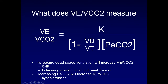You see increased dead space ventilation when you measure VE/VCO2 in disease states — in congestive heart failure, pulmonary vascular disease, and pulmonary parenchymal disease. But the other entity that can drive up your VE/VCO2 is hyperventilation: if your VE goes up and your corresponding carbon dioxide goes down, that will also drive up the ratio. So your differential for an elevated VE/VCO2 is disease state or hyperventilation.